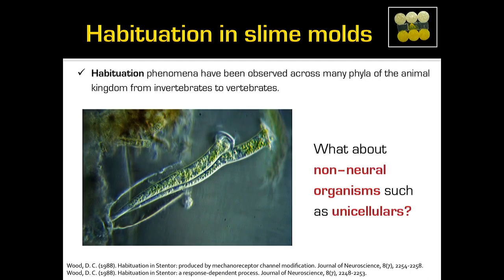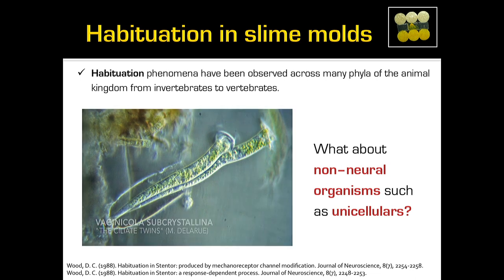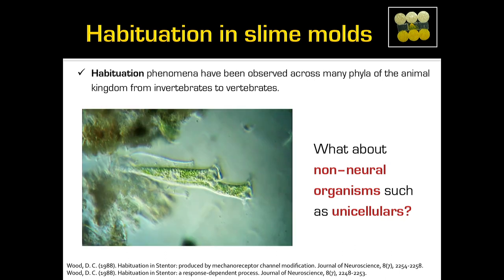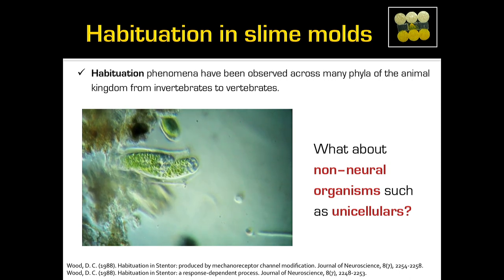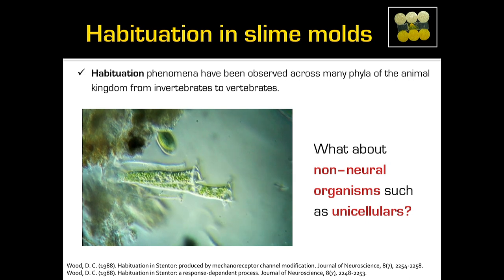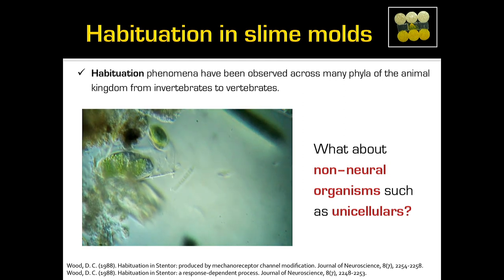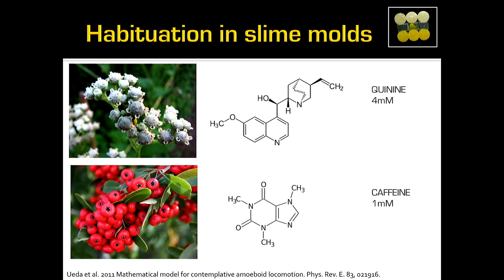Habituation has been shown in many animals but never in unicellular organisms except in Stentor — a unicellular organism that retracts when touched, and stops after repeated touching. But those papers didn't check for specificity or recovery. We wanted to test habituation in slime mold. Since you can't really touch slime mold with a strong response, we used chemical repellents. The experiment was simple: a slime mold with a bridge and a food source on the other side.